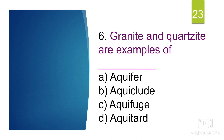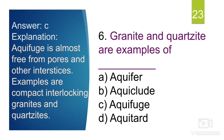The sixth question: granite and quartzites are examples of which — aquifer, aquiclude, aquifuge, or aquitard? These are examples of aquifuge. Aquifuge rock formations are neither permeable nor porous — they are almost free from pores and other interstices. Examples are compact interlocking granites and quartzites. They neither store water nor allow transmission of water, which is why they are known as aquifuge.